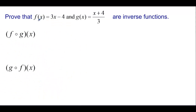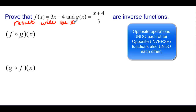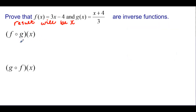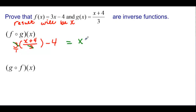Now it says we want to prove these are inverse functions of each other. If they're really inverse functions, the result will be x, because everything else will cancel — they're opposite operations and opposite numbers — so we should just be left with x. So let's try this composition. f is the outside function, so 3 times my g function minus 4. My g function is (x + 4)/3. When I multiply, I have 3/1 times (x+4)/3, so those 3s cancel. I'm left with x + 4 and then minus 4, which equals x.